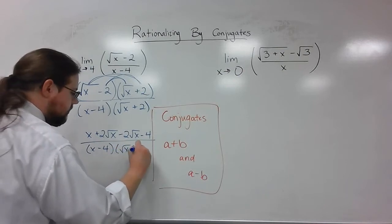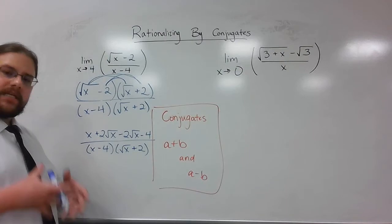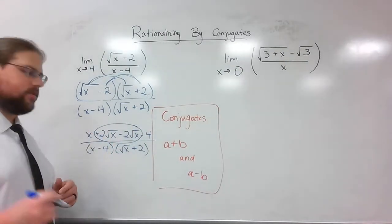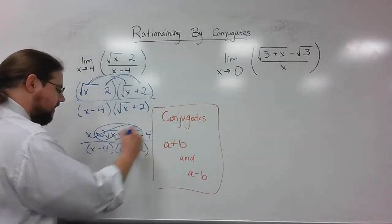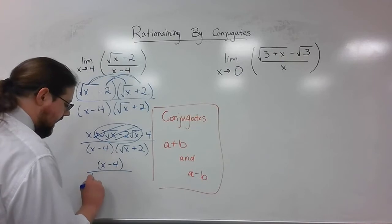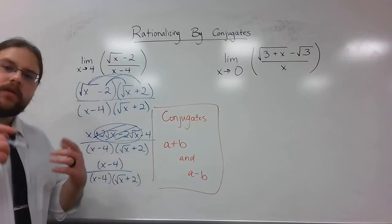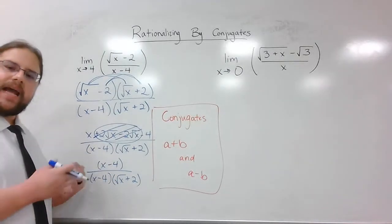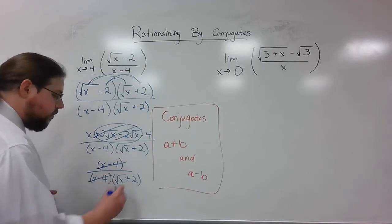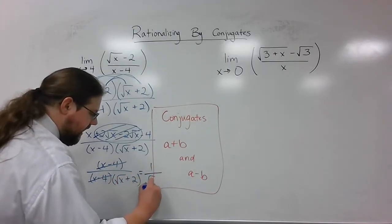If I try to eliminate common terms, I've got this positive 2 times the square root of x and a negative 2 times the square root of x. Well, they're just going to go away. I'm left over with x minus 4 on the top over x minus 4 times the square root of x plus 2 on the bottom. Well, again, think about it. I can reduce these common factors.